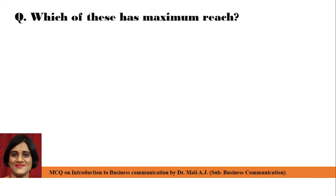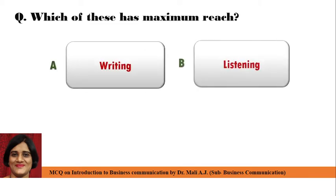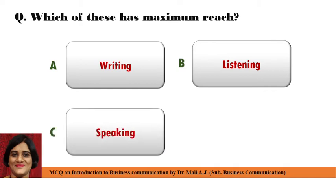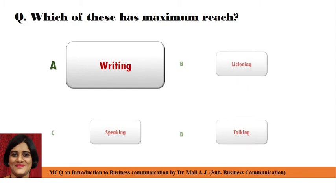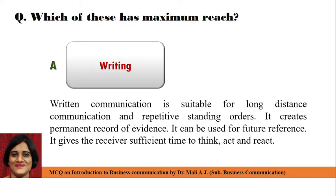Next question: Which of these has maximum reach? Point A: Writing, Point B: Listening, Point C: Speaking, and Point D: Talking. Correct answer is Point A: Writing. Writing has the maximum reach. Because written communication is suitable for long distance communication and repetitive sending of orders. It creates a permanent record of evidence, it can be used for future references, and it gives the receiver sufficient time to think, act, and react.